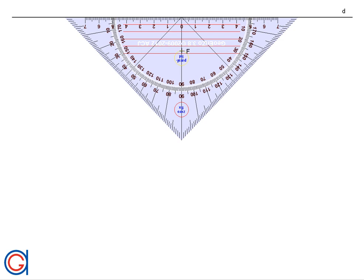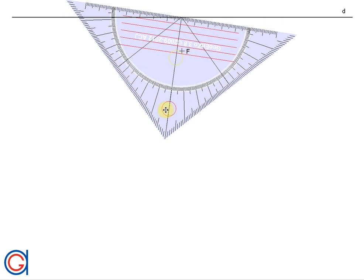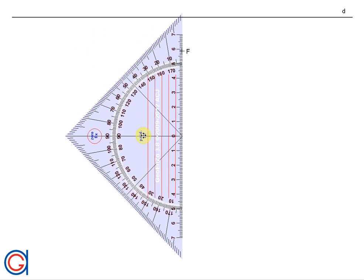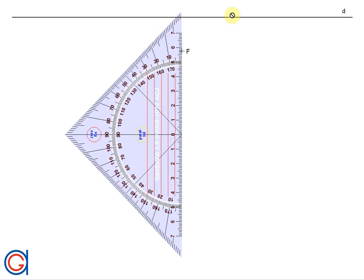So the first step is to draw a perpendicular line to the directrix which passes through the focus point F, and this line is going to be the axis of symmetry of the parabola that we want to draw, which we will call E.